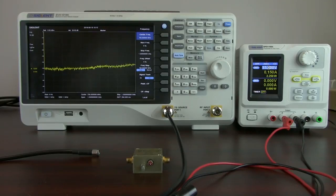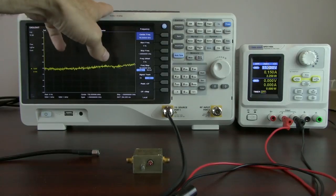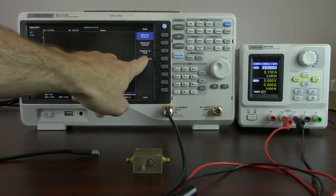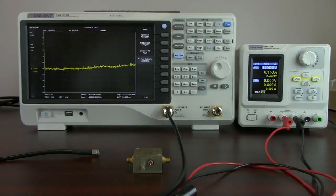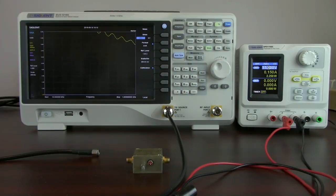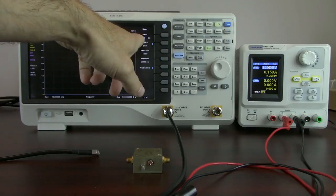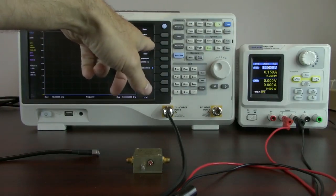So the first thing we're going to do is configure the SVA for VNA. We're just going to press the mode button and hit Vector Network Analysis. That's going to put the instrument into VNA mode or Vector Network Analyzer mode.